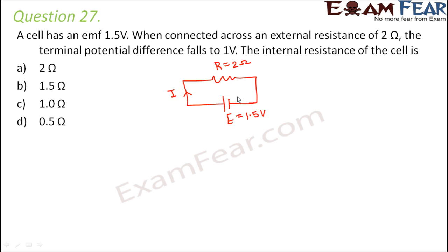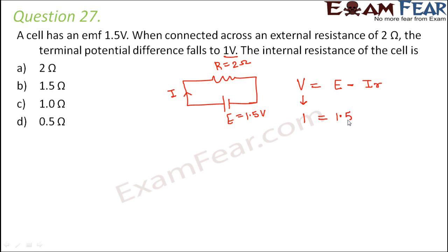The net potential difference between the terminals of the cell is called terminal potential difference. We know that terminal potential difference V equals E minus I·r. V is given as 1 volt, E is 1.5 volts. We do not know I or the internal resistance r. To find I, we note that I is the current flowing through the external resistance R, and the potential difference across the external resistance is also 1 volt.